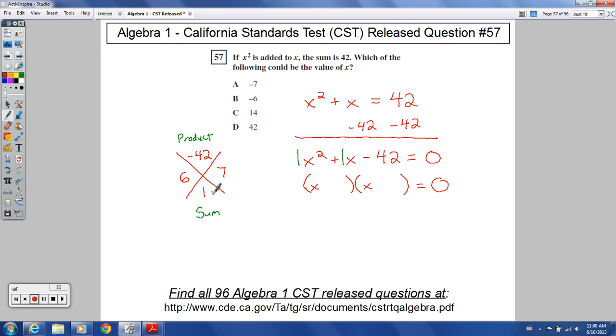one of them has to be negative though to get a negative 42. Which one should be negative? Well, remember you want a sum of positive 1, so the smaller number should be the negative number. Negative 6 times 7 gives you negative 42, negative 6 plus 7 gives you positive 1. So we can fill in our blanks now with a negative 6 and a positive 7.